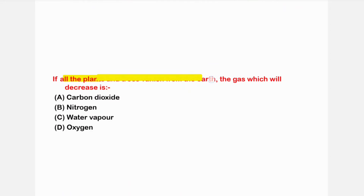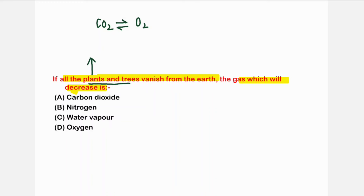The next question: if all the plants and trees vanish from earth, which gas will decrease? Plants maintain the balance of carbon dioxide and oxygen. Plants use carbon dioxide in photosynthesis and release oxygen, which other organisms inhale. So if plants vanish, oxygen will decrease.